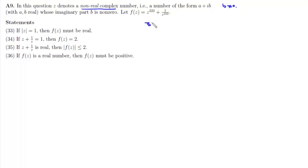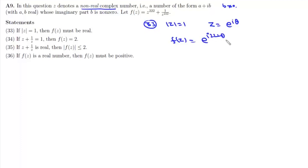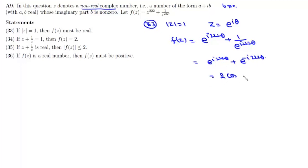Statement 33 says: if |z| = 1, then f(z) must be real. If |z| = 1, then z = e^(iθ), so f(z) = e^(i·222θ) + 1/e^(i·222θ) = e^(i·222θ) + e^(-i·222θ). Using Euler's formula, the sine parts cancel and we get 2cos(222θ), which is a real number. Therefore, statement 33 is correct.